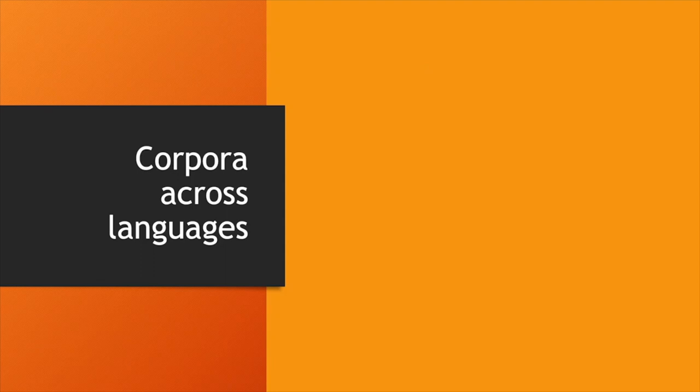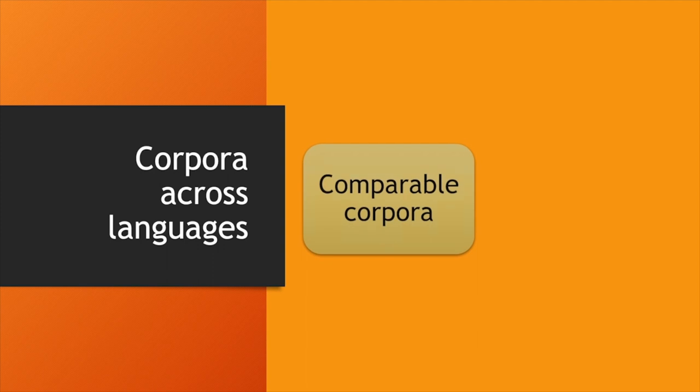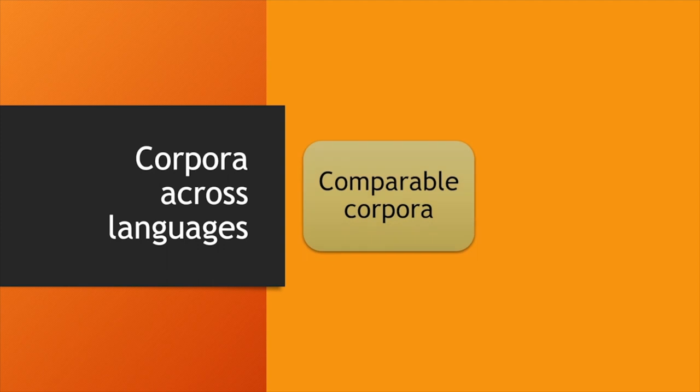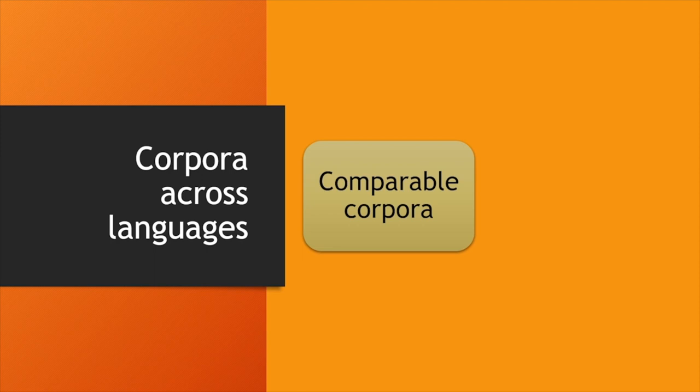For this we can use two kinds of corpora. Comparable corpora are data sets collected in similar circumstances and of a similar size in different languages, so that these can be compared — we are not comparing apples with oranges, rather we are comparing apples with apples. The other kind of corpus we can use is a parallel corpus, where texts are accompanied side by side with already-made translations into a target language, and each sentence in the original text is accompanied by the equivalent translated sentence in the target language.